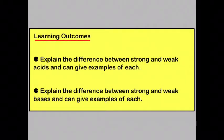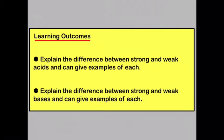You should be able to explain the difference between strong and weak acids, and give examples of each. Examples of strong acids are things like hydrochloric, nitric, and sulfuric, whereas weak acids are things like carboxylic acids, carbonic acid, and sulfurous acid. You should also be able to explain the difference between strong and weak bases and give examples of them. Strong bases are things like potassium hydroxide, sodium hydroxide, and calcium hydroxide. The only weak base you need to know is ammonia.